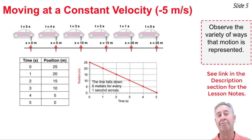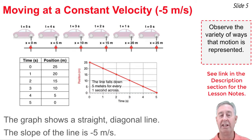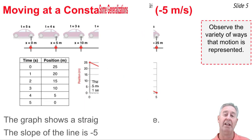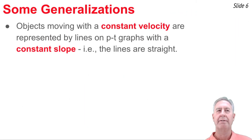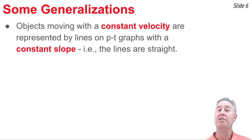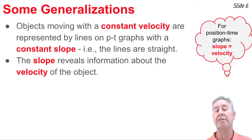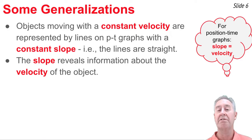That's a slope of negative 5, matching a velocity of negative 5. Across all three analyses we find the same result: for constant velocity motion, the slope of the position-time graph equals the velocity of the object, and the line itself is a straight diagonal line. Objects moving with constant velocity are represented by straight diagonal lines, and the slope of that line gives us the velocity.